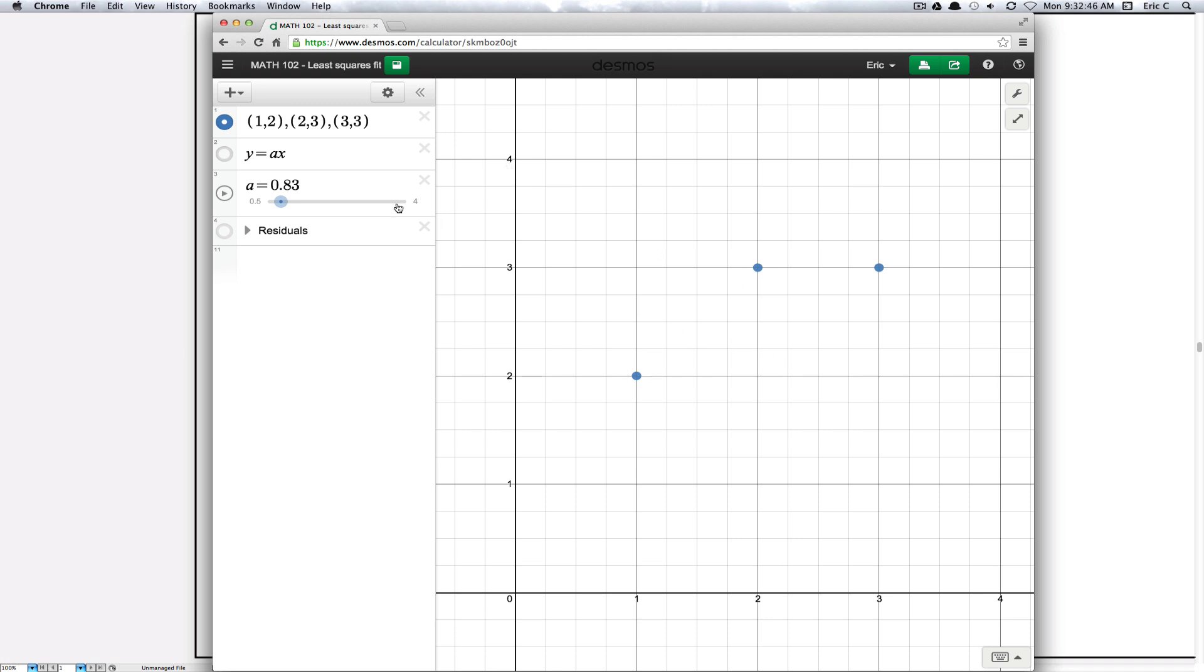So let's go over to Desmos and see how that is usually interpreted. So here we have those same three points and what I'm going to do is I'm going to add in a line. So this is the line y equals ax. Now in many cases linear regression or linear least squares is done with a line that does not necessarily go through the origin. We're going to focus on lines that go through the origin because the analysis and formulas are simpler.